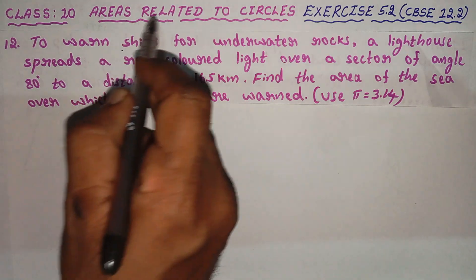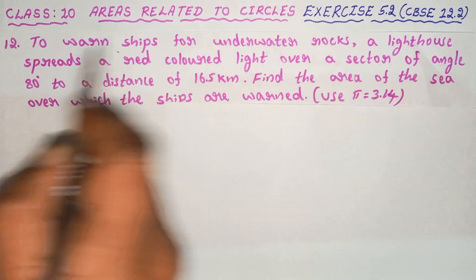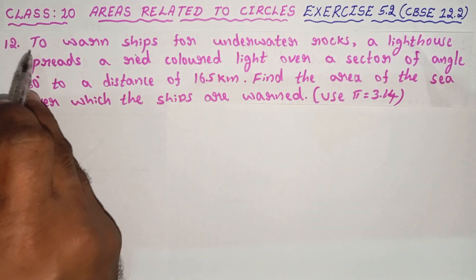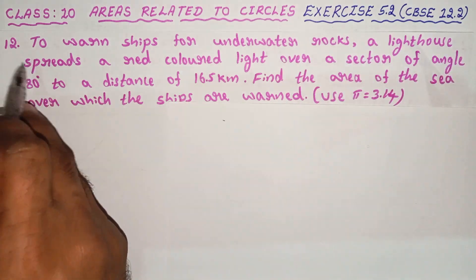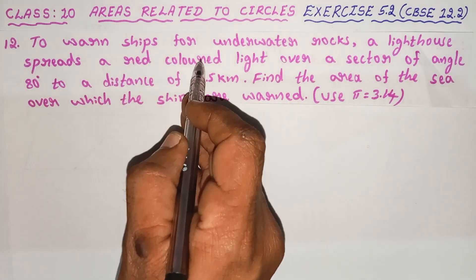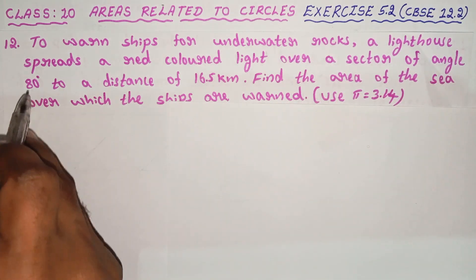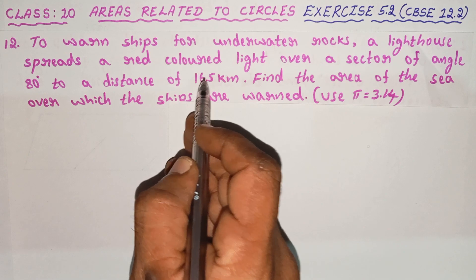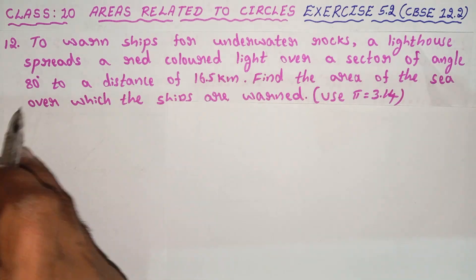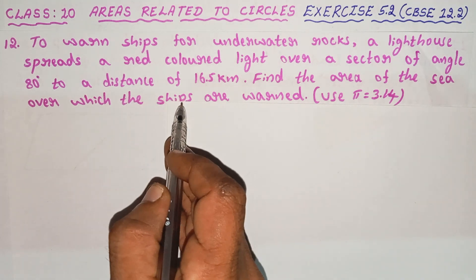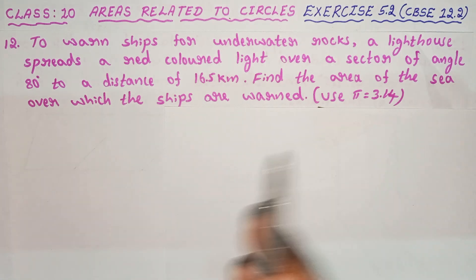Clause 10. Areas related to circles. Exercise 5.12, 12th problem. To warn ships or underwater rocks, a lighthouse spreads a red-colored light over a sector of angle 80 degrees to a distance of 16.5 km. Find the area of the sea over which the ships are warned. Use pi equal to 3.14.